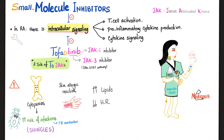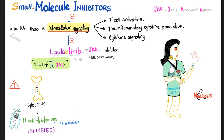As I've mentioned, tofacitinib targets JAK1 and JAK3. But today's focus, upadacitinib, is anti-JAK1 only — a selective JAK1 inhibitor.